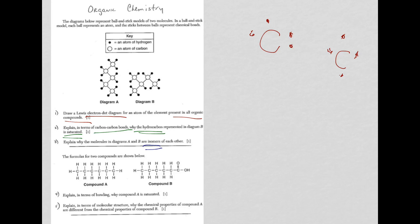From four and five here, we have two compound structures, A and B, once again. Instead of diagram A and B, we're calling them compound A and B. Alright, so let's take a look. Once again, notice in question four, it says, explain in terms of bonding why compound A is saturated.